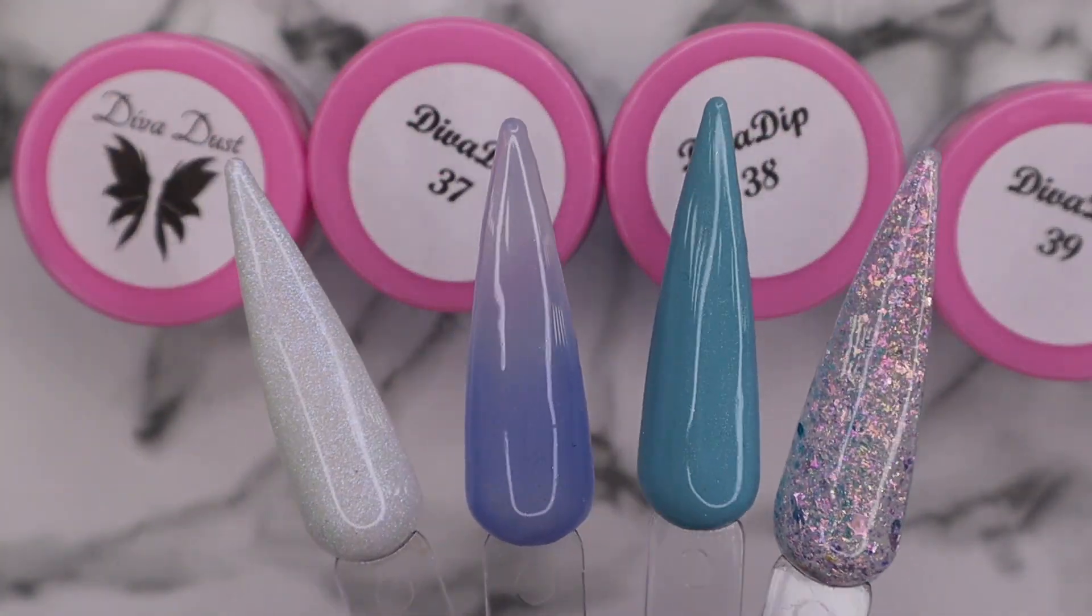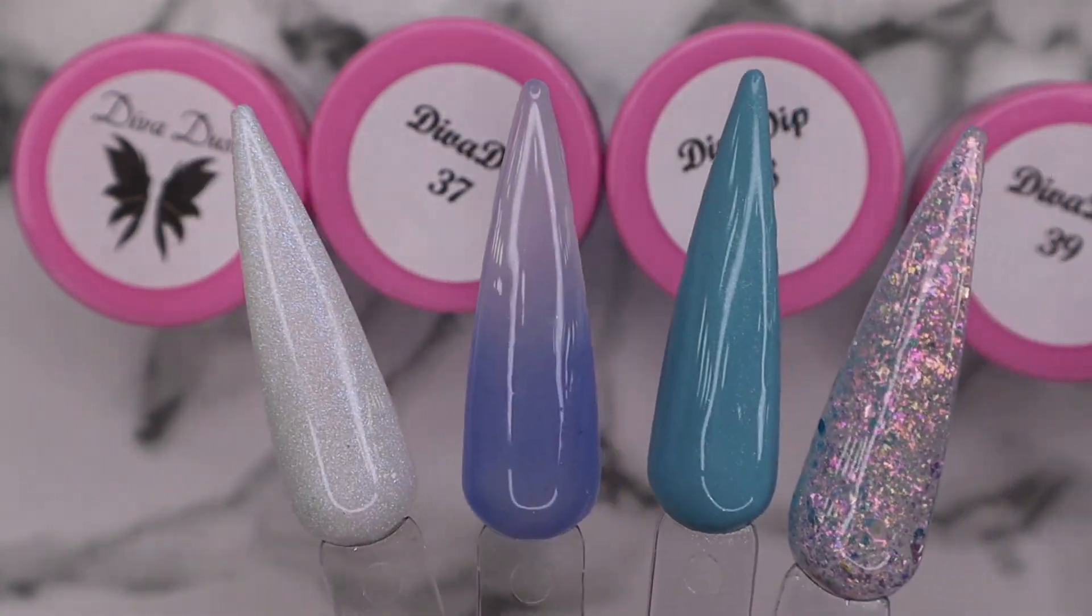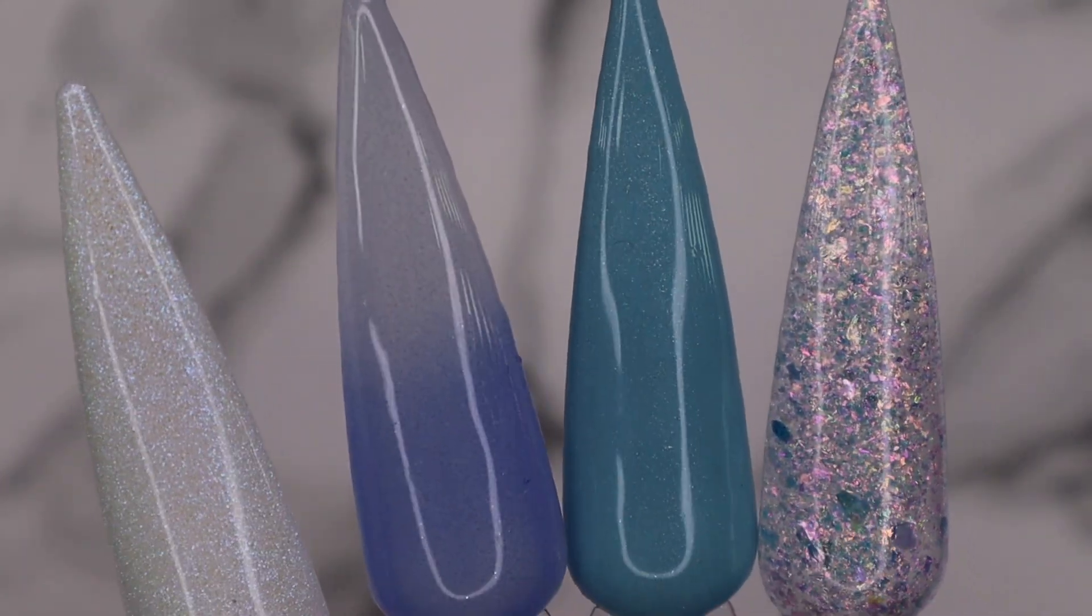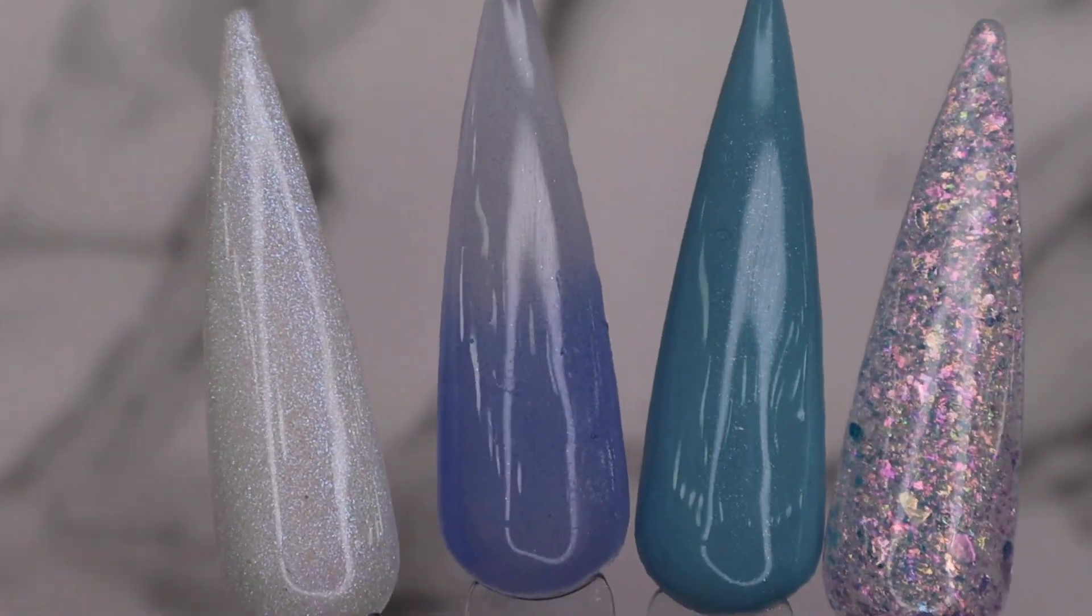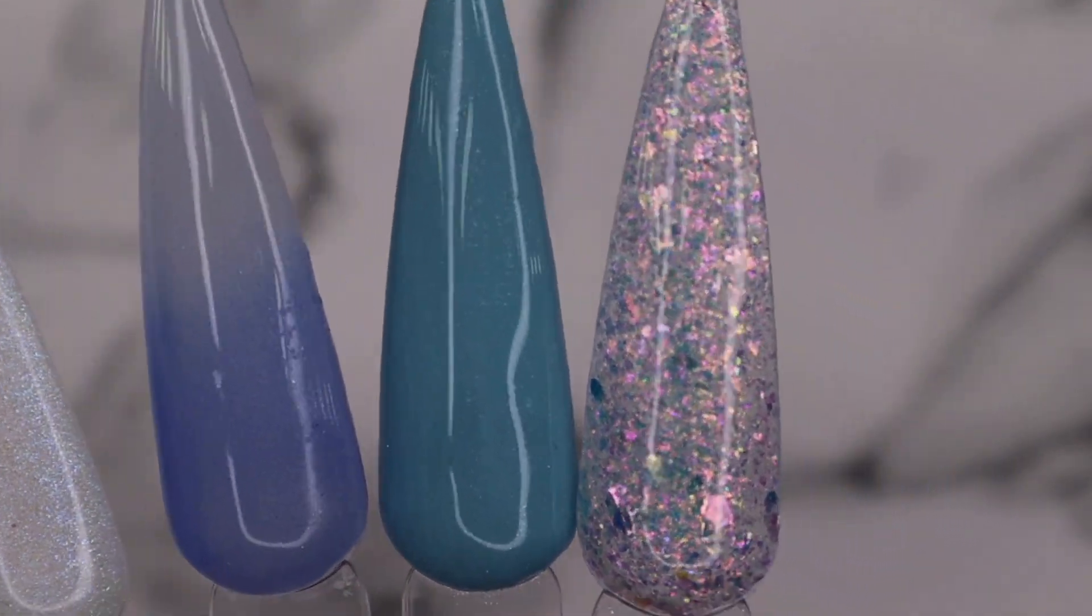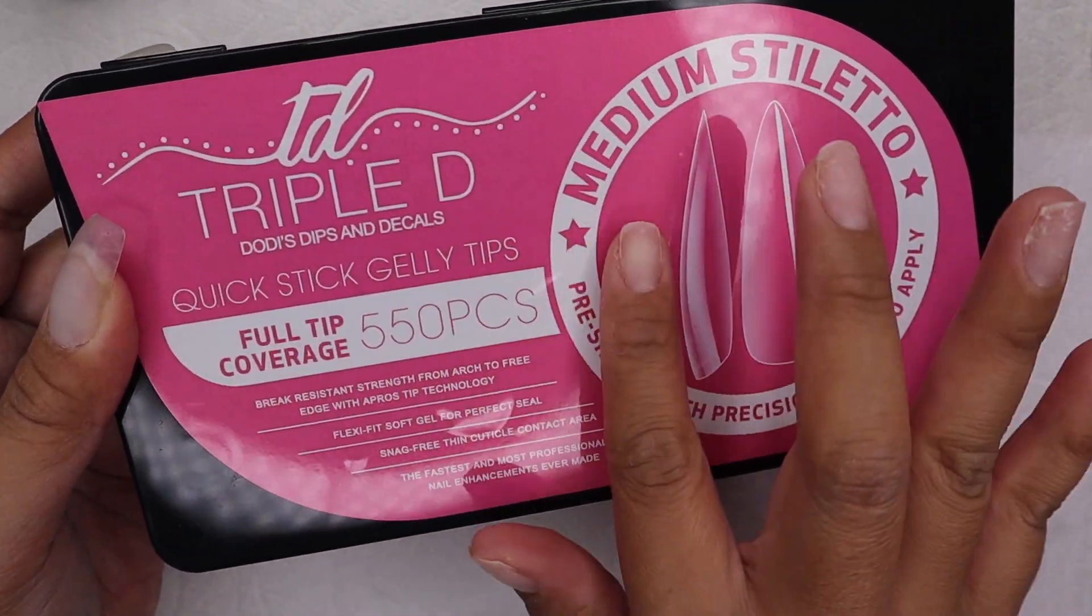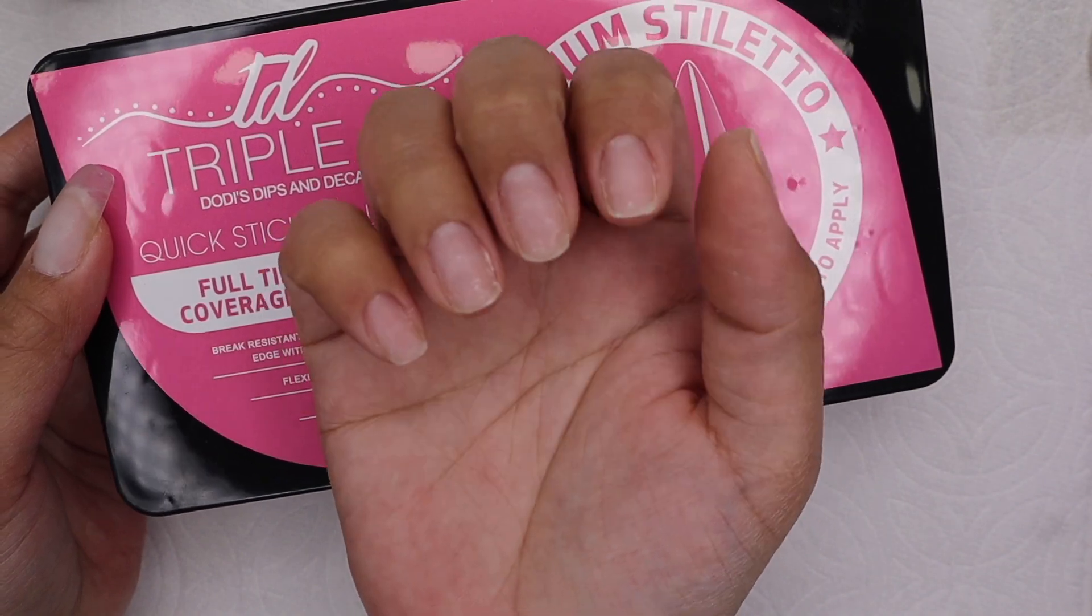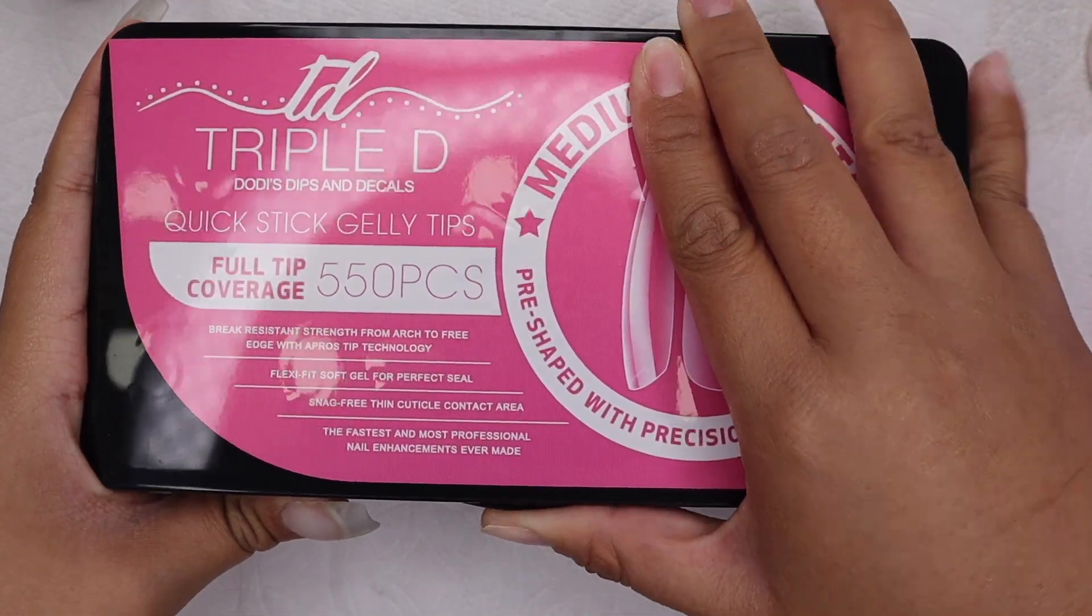Here are the numbers: 37, 38, 39, and the other one is a Diva Dust. Here are the swatches of the colors. Going back to the jelly tips, I am going to use this.